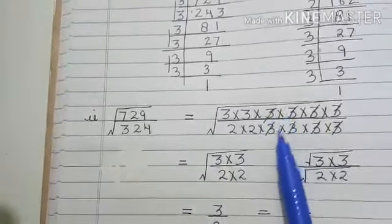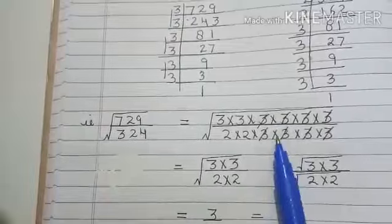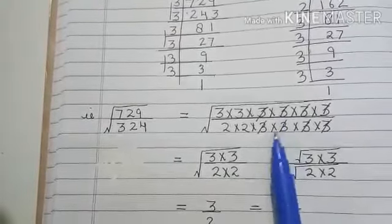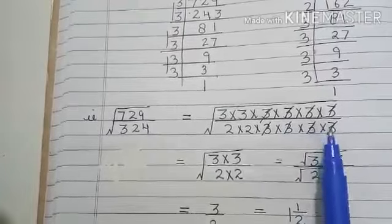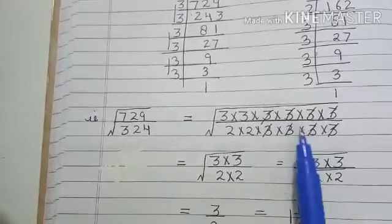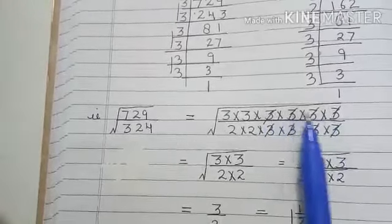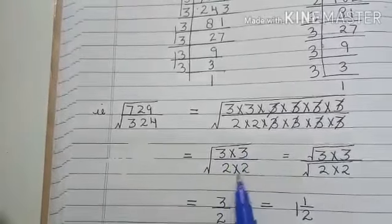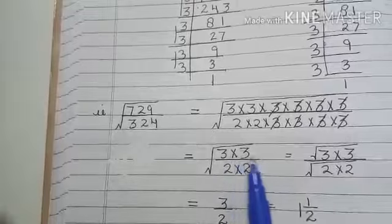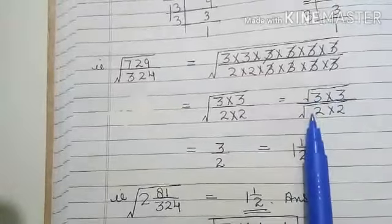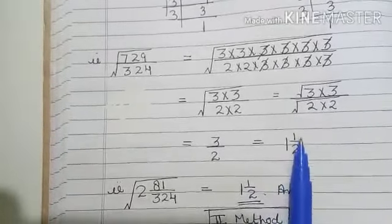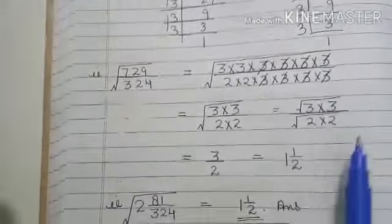When you write the prime factors, you can see some factors are common in the numerator and denominator. Class, it is very simple if you cancel it here. So when you see these four 3s can be cancelled by these four 3s, now the remaining 3s are 3 times 3 in the numerator and 2 times 2 in the denominator. And when you find the square root of numerator and denominator separately, it comes to be 3 by 2, which is 1 whole 1 by 2.